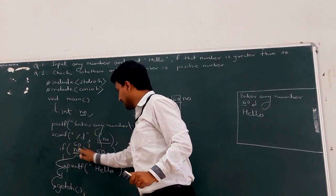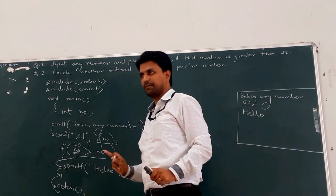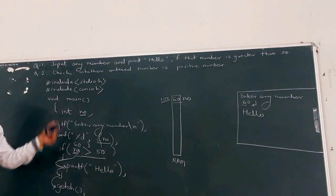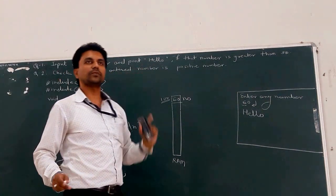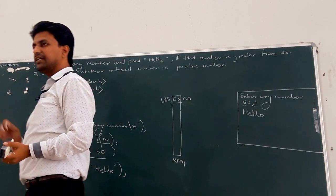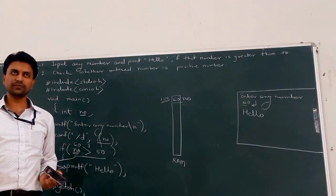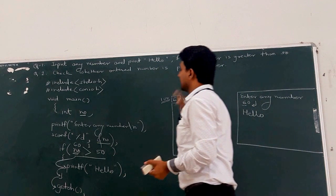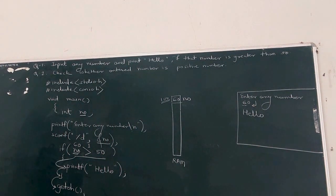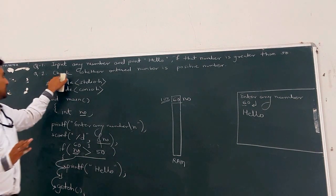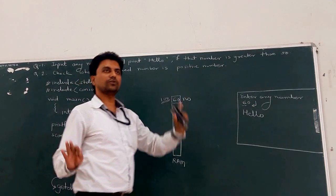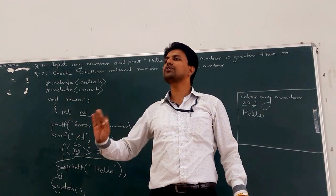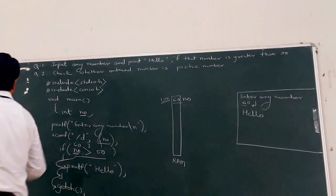This is the simple program based on the if statement — if, condition, and body of if. Now the second problem statement based on if: check whether the entered number is positive. If the number is positive, give the message 'number is positive.' If the number is negative, don't give any message. So use a simple if statement.